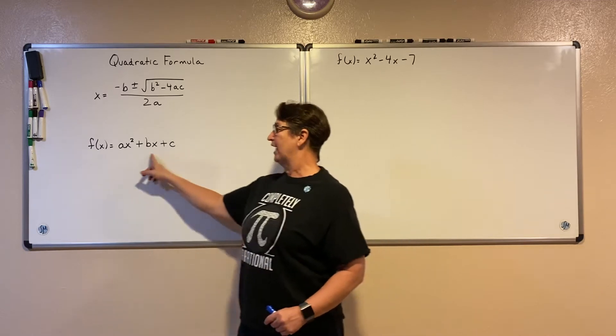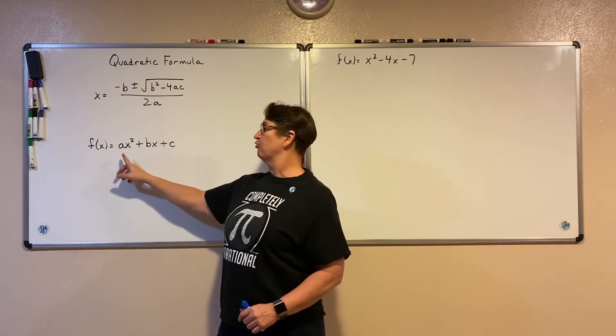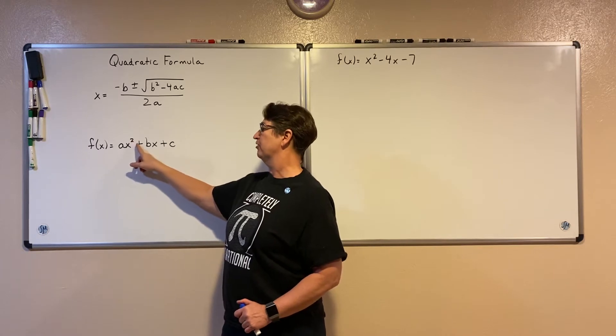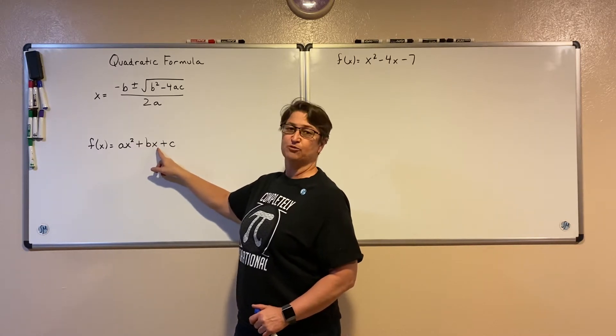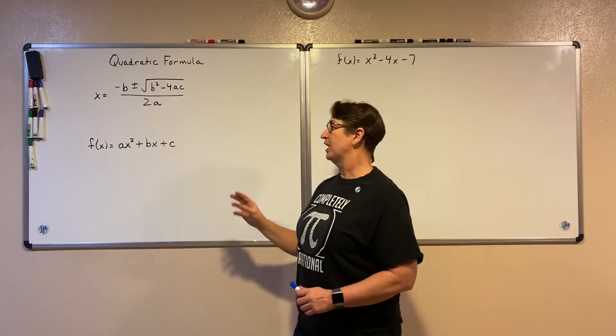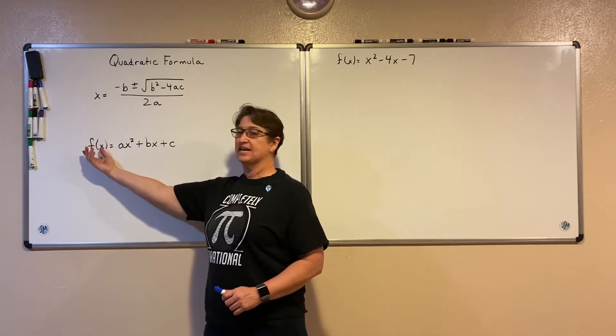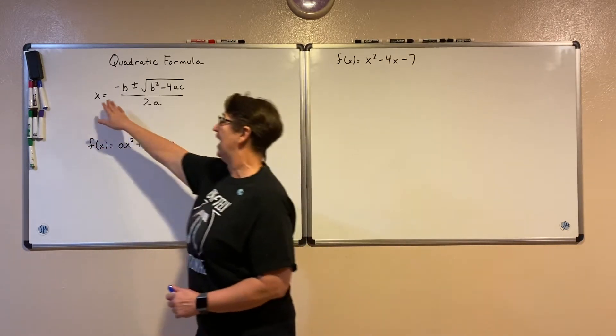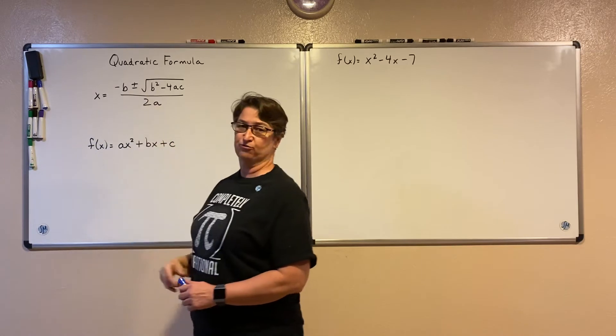And when I have a quadratic in standard form, where I have a number times my x squared plus another number times my x plus a constant there on the end, when I have this quadratic function and I set it equal to zero, then I can solve for x by using this formula.